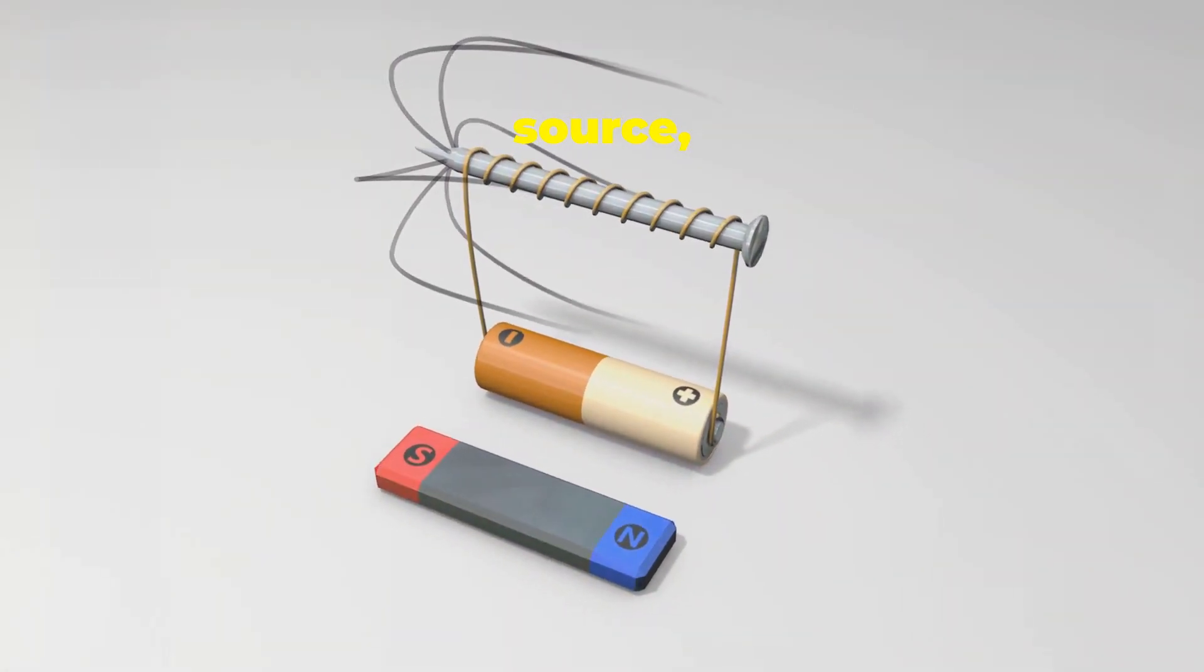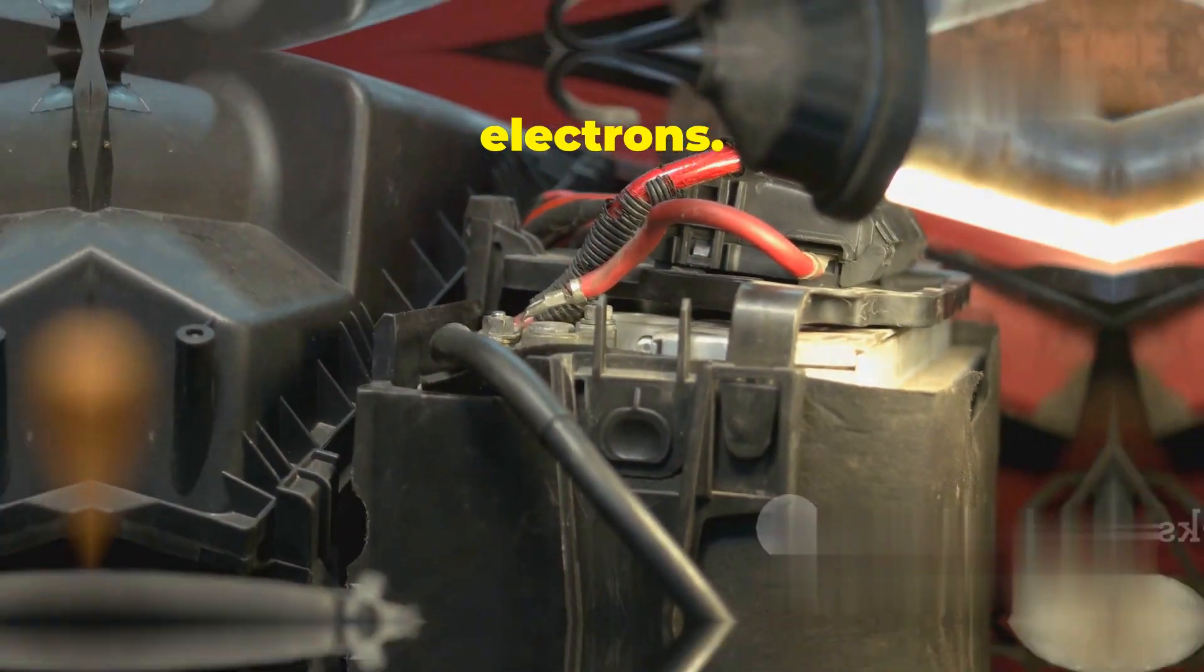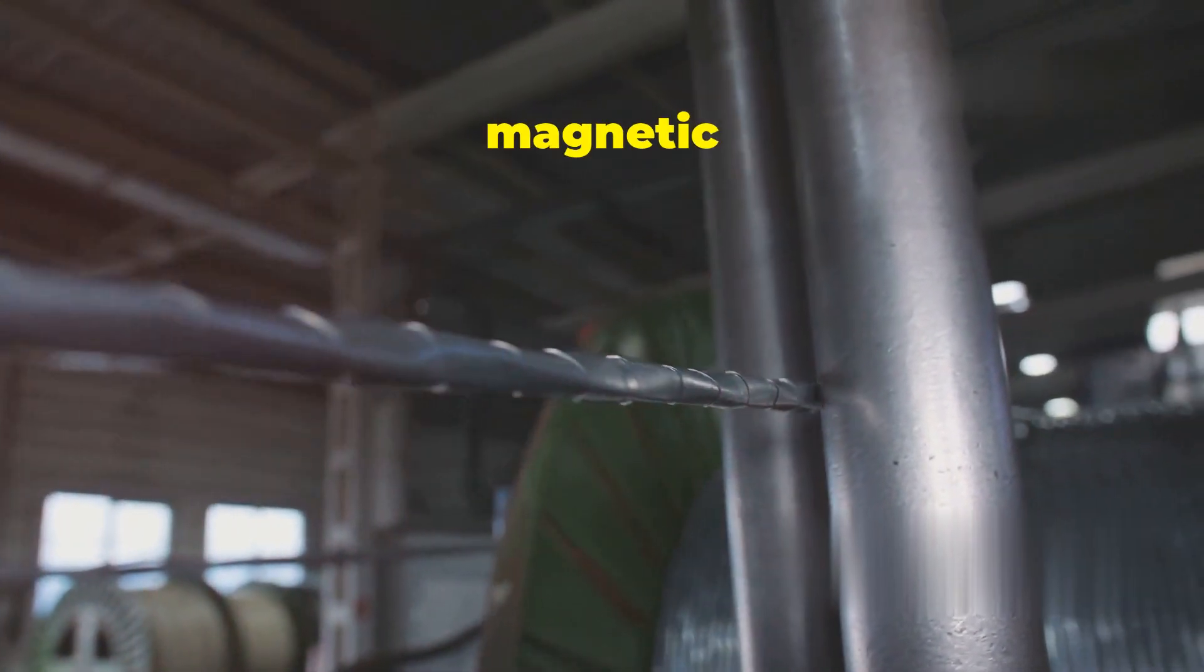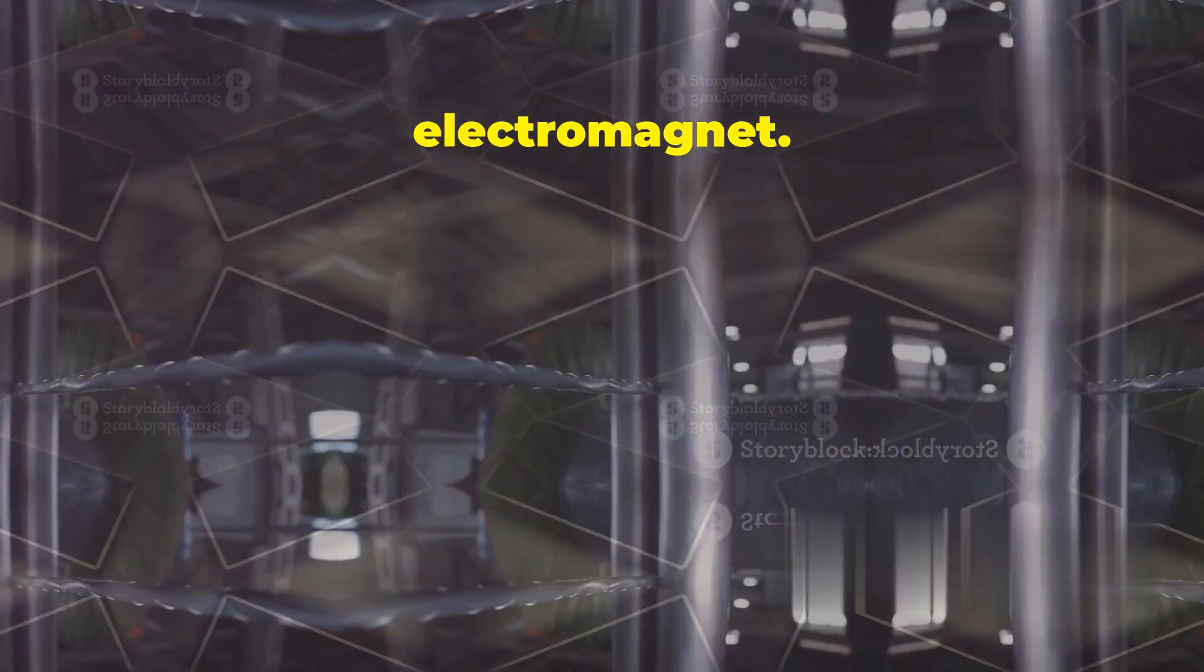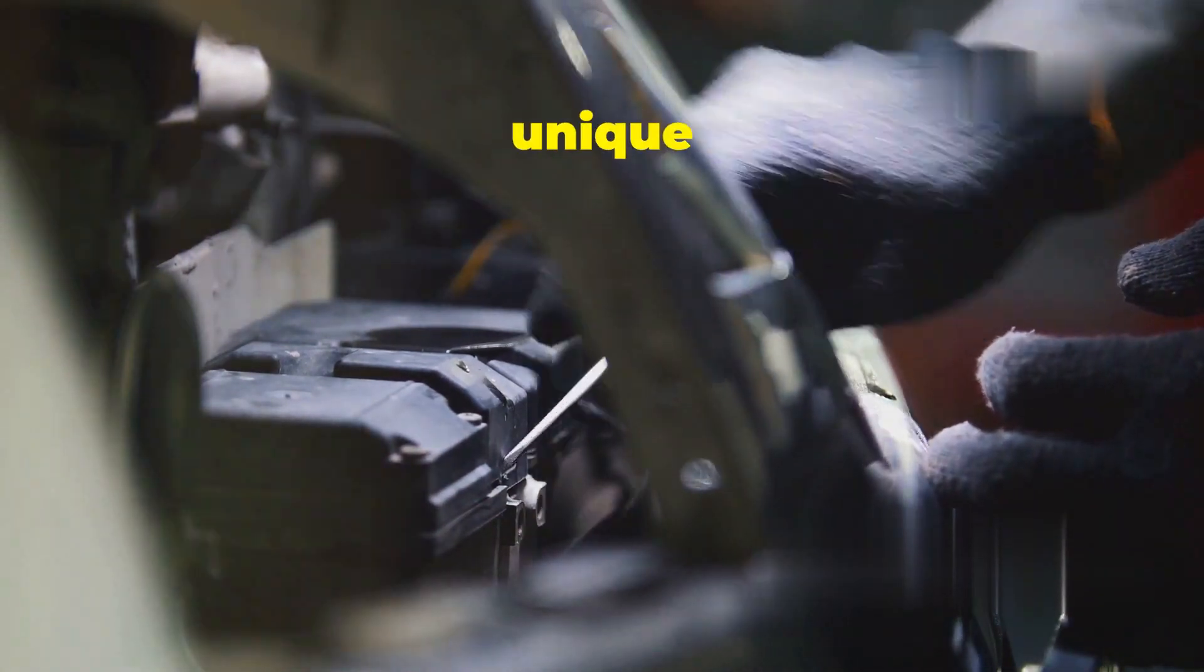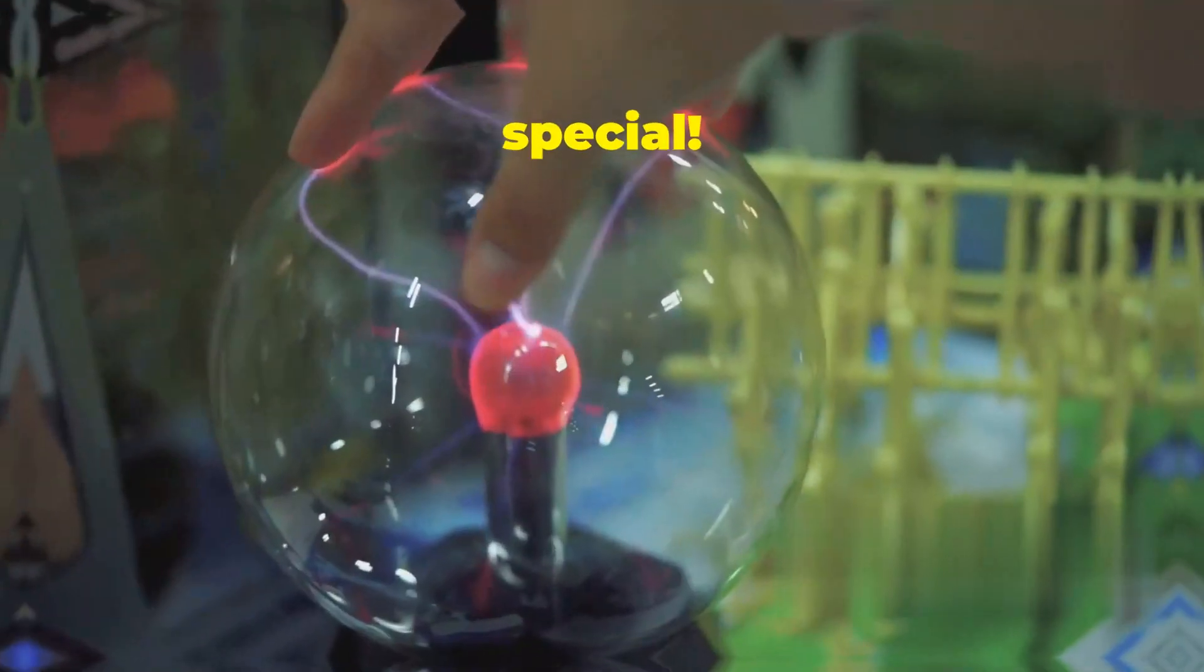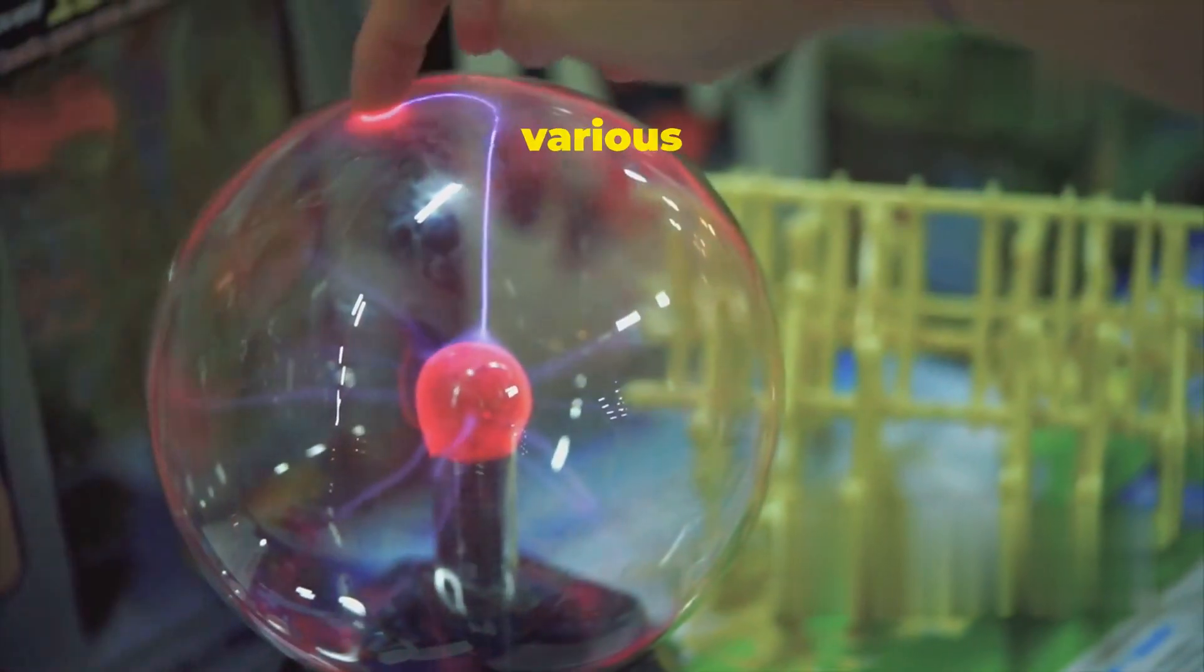Finally, we need a power source, like a battery, to provide the electric current. The power source is essential for initiating the flow of electrons. When we connect the battery to the wire coil, electrons start flowing, creating a magnetic field. This flow of electrons is what powers the electromagnet. Disconnect the battery, and the flow of electrons stops, and the magnetic field disappears. This on-off capability is a unique feature of electromagnets. This controllability is what makes electromagnets so special. They can be turned on and off as needed, making them incredibly versatile for various applications.